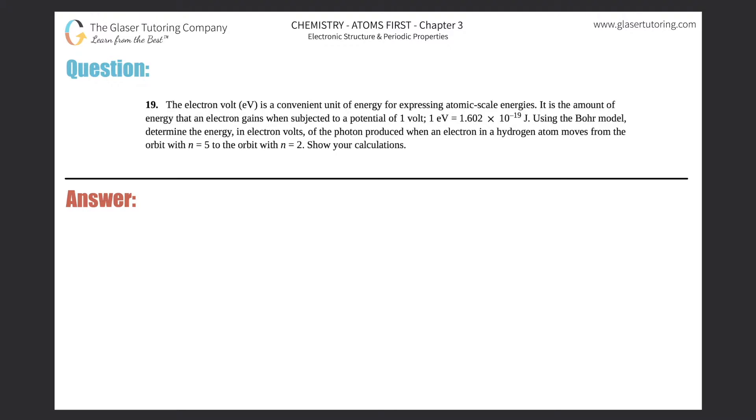Number 19. The electron volt EV is a convenient unit of energy for expressing atomic scale energies. It is the amount of energy that an electron gains when subjected to a potential of one volt. And one electron volt equals 1.602 times 10 to the negative 19 joules. Using the Bohr model, determine the energy in electron volts of the photon produced when an electron in a hydrogen atom moves from an orbit with n equals 5 to the orbit with n equals 2. Show your calculations.